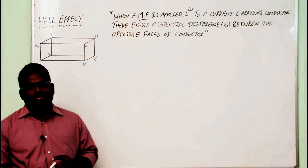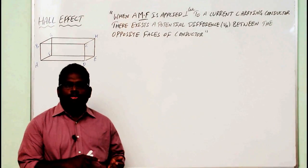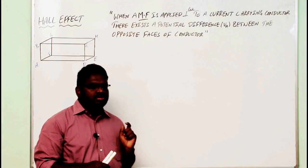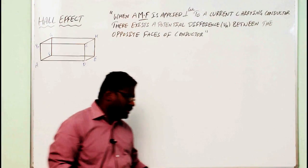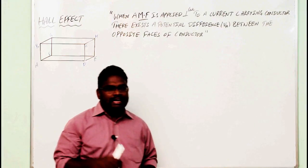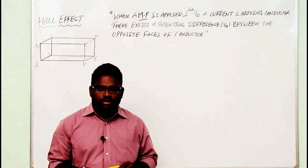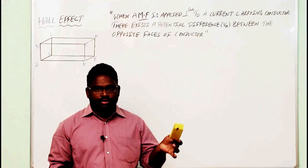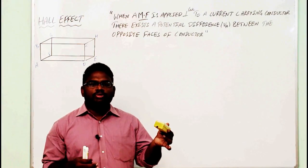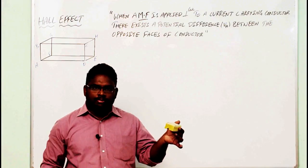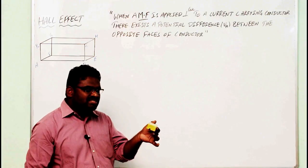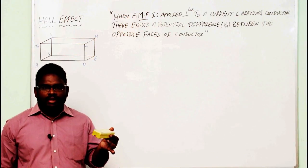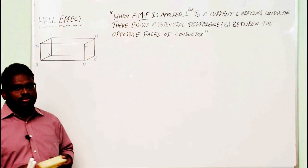To know whether a given semiconductor is of n-type or p-type, we have a theory called the Hall Effect. By using the Hall Effect, one can decide whether a given material is of n-type or p-type semiconductor. Without this test, if a material is given to you, it is not possible to tell its type. So to determine this, we perform what is known as the Hall Effect.